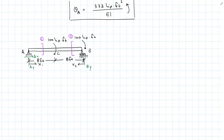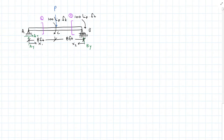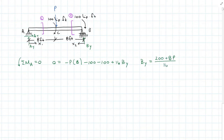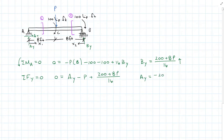For the vertical deflection at C, I remove the moment P — which was for slope at A — and add instead a point load P at C. Summing moments about A, I get BY equal to 200 plus 8P divided by 16, acting up. Summing forces in the Y direction, I get AY equal to negative 200 plus 8P divided by 16.